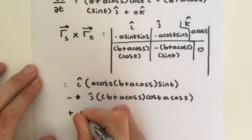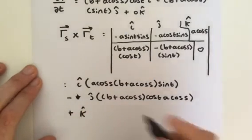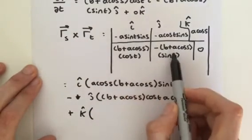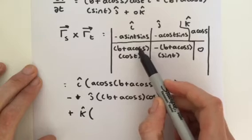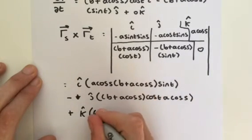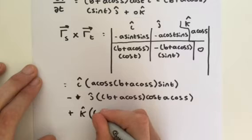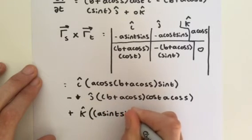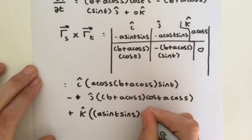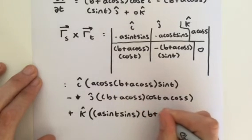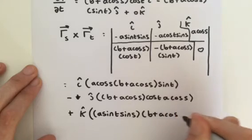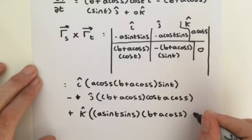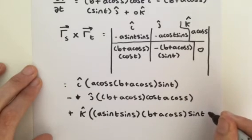We add k, our unit vector, in the z direction, and we're going to multiply this by that times that minus that times that. So, what does this give us? It's going to give us a sine of t, first of all, times the sine of s. And we multiply that by b plus a cosine of s, which we multiply by the sine of t.